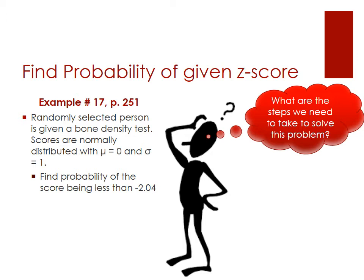We're going to be starting with number 17 on page 251. A randomly selected person is given a bone density test and the scores are normally distributed with a mean of 0 and a standard deviation of 1. The problem we need to solve is to find the probability of a score being less than negative 2.04.